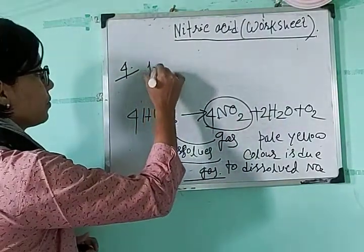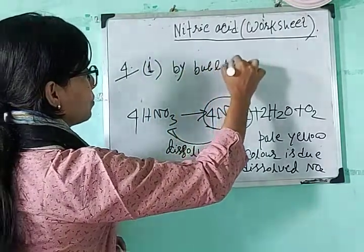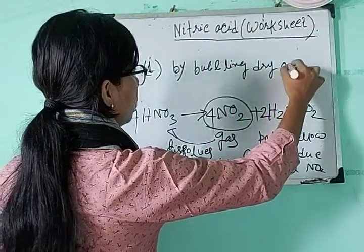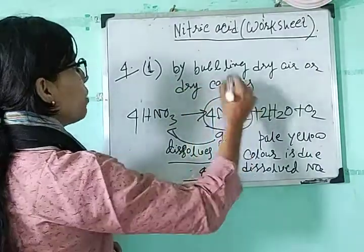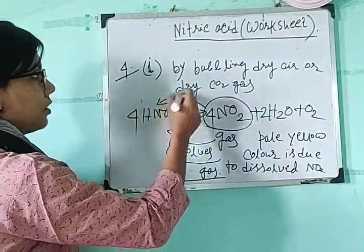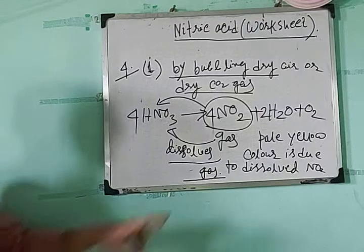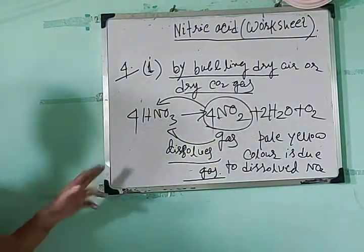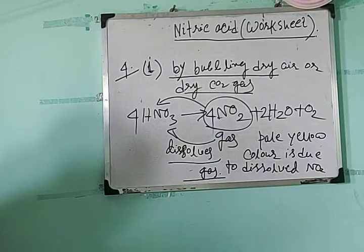The first process is by bubbling dry air or dry carbon dioxide gas through the nitric acid. When you bubble dry air or dry carbon dioxide gas, the nitrogen dioxide is oxidized to nitric acid. So the function of dry air or dry CO₂ is to help the nitrogen dioxide gas get oxidized back into nitric acid.